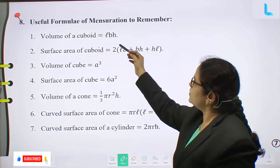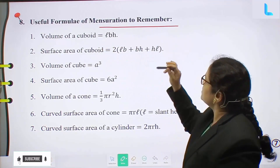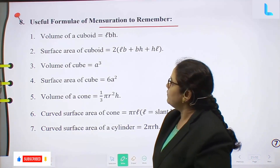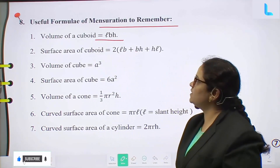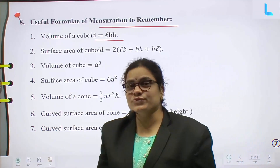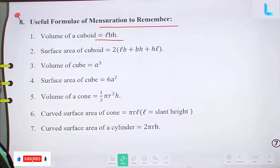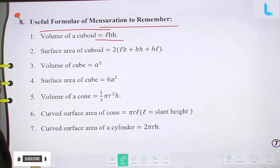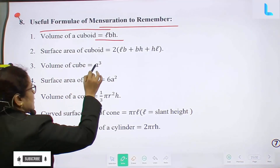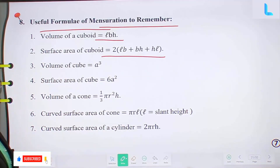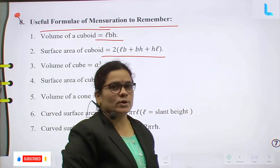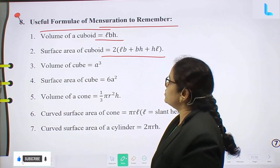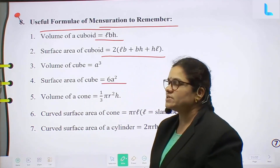Next, useful formulas of mensuration to remember. Volume of cuboid is l·b·h. Surface area of cuboid equals 2(lb plus bh plus hl), where h is height, b is breadth, l is length. Volume of cube equals a³. Surface area of cube equals 6a².